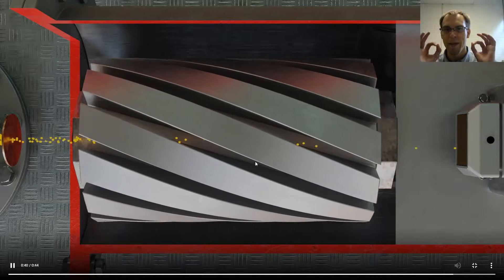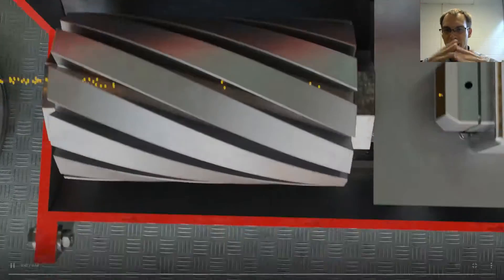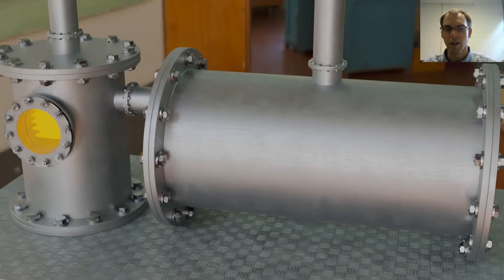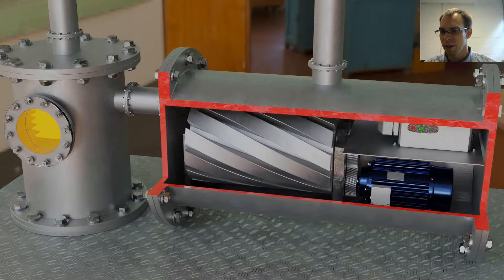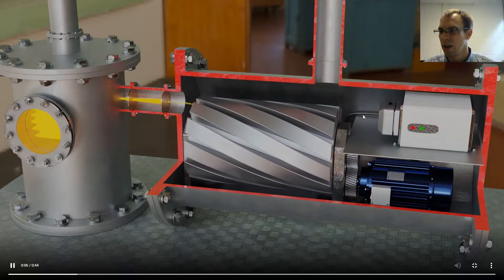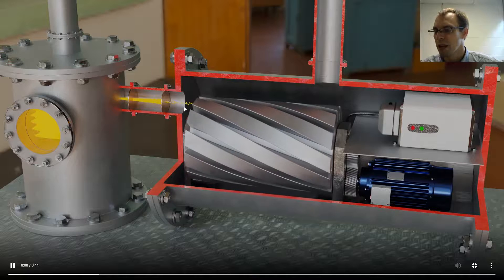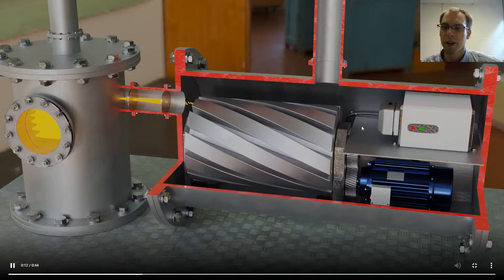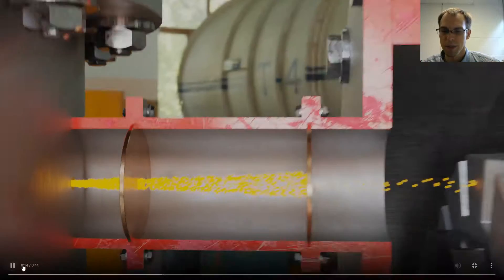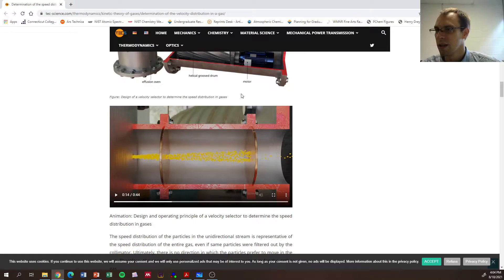And so that's a way to select one particular velocity out of all the possible velocities, or I should say speeds. We can say velocity because it's in a specific direction. That's how we can pick just that one particular speed that's going through, and then we detect it over here once it's made it through. So this is just looping through again.